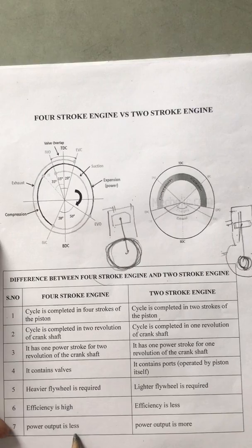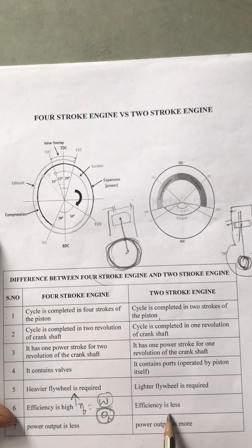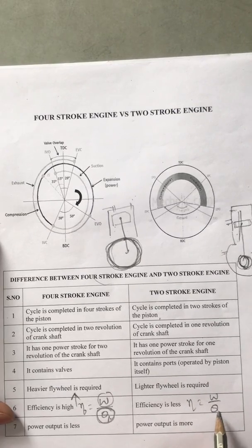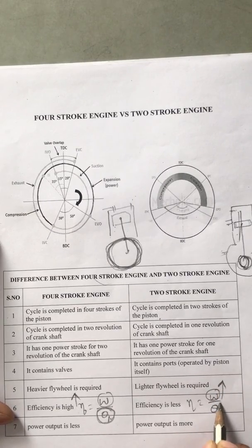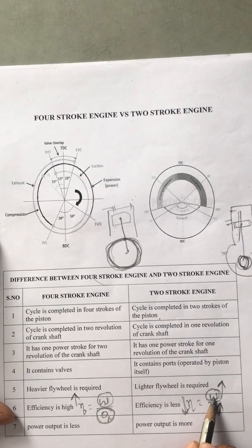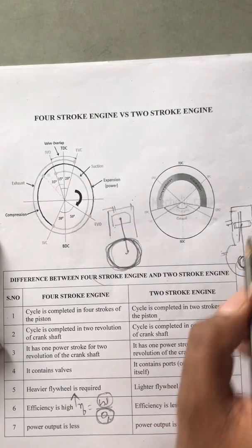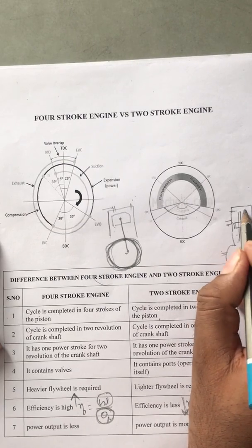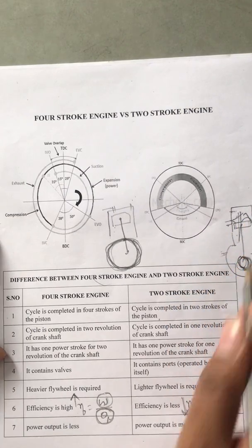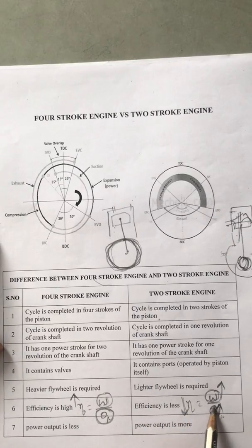Efficiency is high in the 4-stroke engine even though work output is less, because efficiency equals work divided by heat supplied, and the heat supplied is very low. In the 2-stroke engine, efficiency is less but power output is more — because while work output is very high, the heat supplied Q is even higher, so the rate of increment in Q dominates, reducing efficiency. Efficiency is also lower in the 2-stroke engine due to scavenging — during exhaust, fresh charge escapes along with exhaust gases without participating in combustion, causing fuel wastage and more pollution. That is why the 2-stroke engine is being phased out.